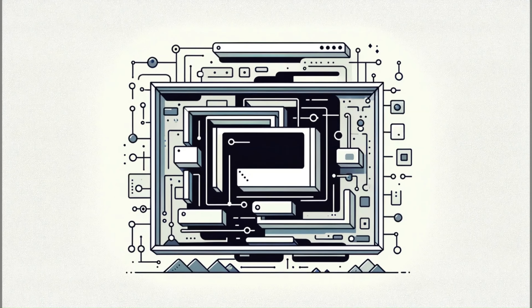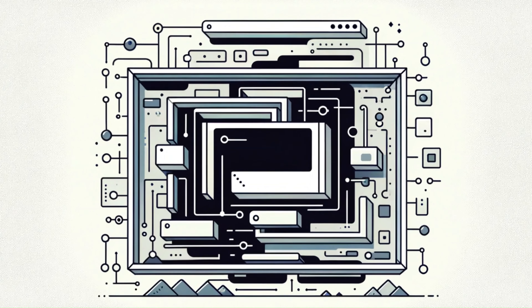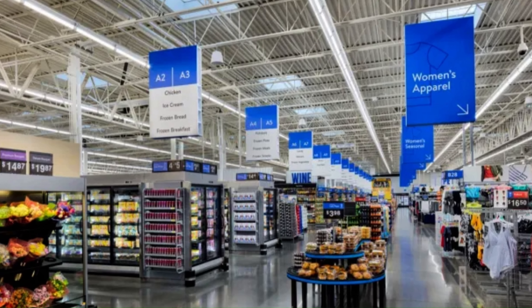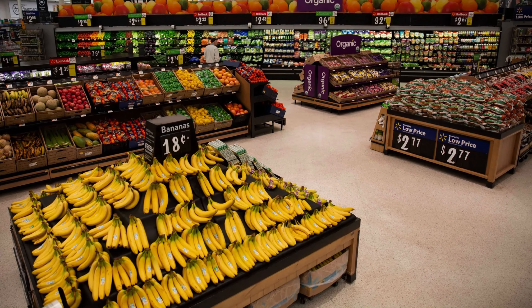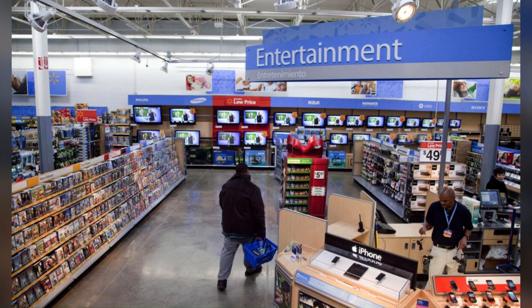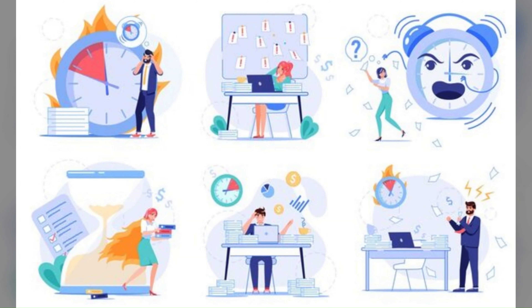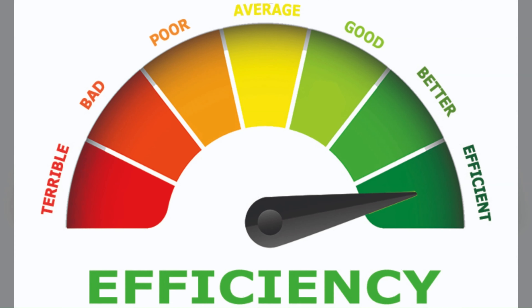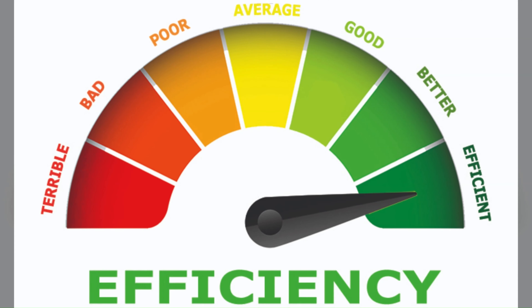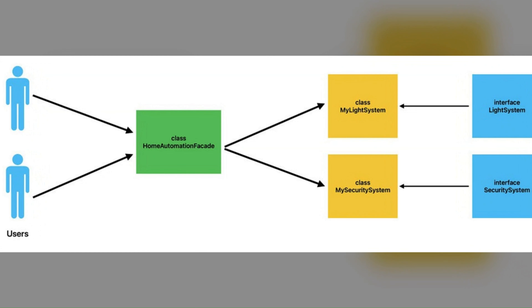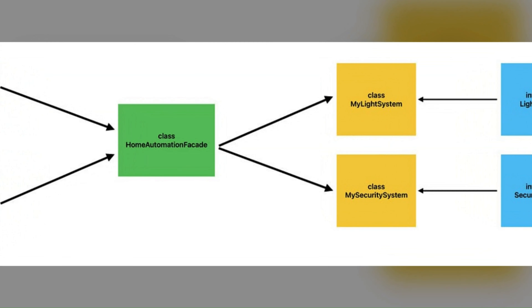Now let's talk about the Facade pattern. This provides a simplified interface to a complex subsystem without encapsulating the entire subsystem. Think of it like a big mega store with departments for electronics, groceries, and medicines. Instead of going to each department to get your questions answered, you go to a single customer service department that acts as an interface to the entire store — that is what the Facade pattern means.